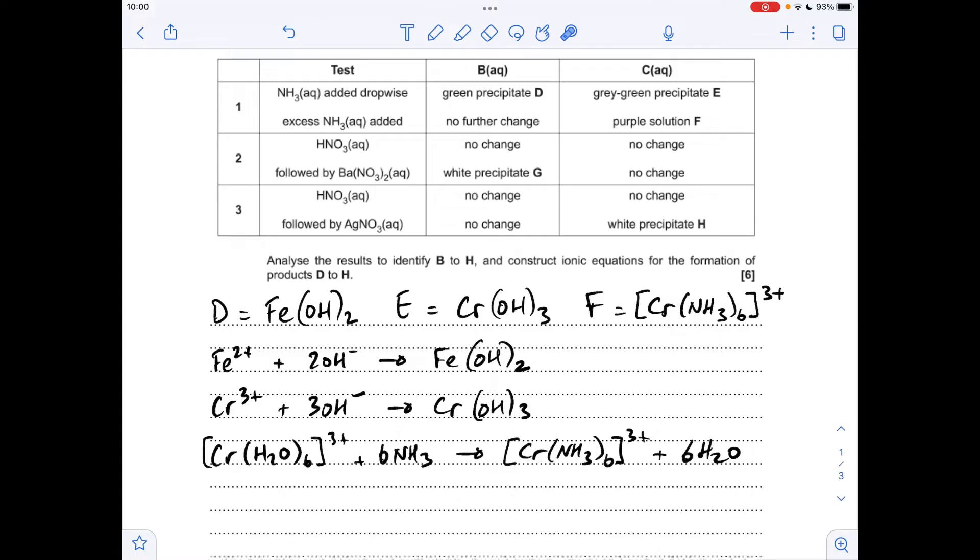Moving on to test two, they're starting off by adding nitric acid—that's a test for carbonate ion. No change for either, so it's not a carbonate. They've then followed up with adding barium nitrate, a test for sulfate, and we've got a white precipitate which they're labeling as G for substance B. So B must be a sulfate and G will be barium sulfate. No change for C, so C isn't a sulfate.